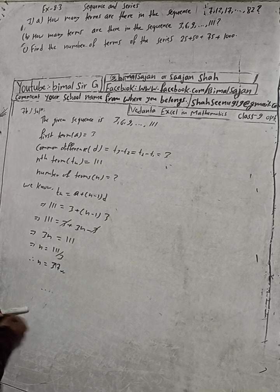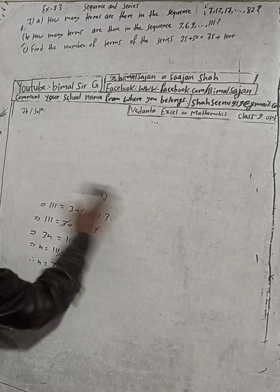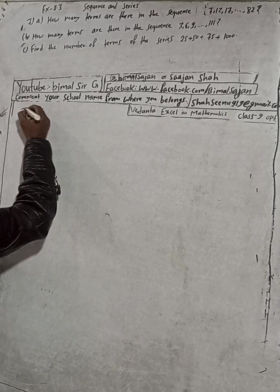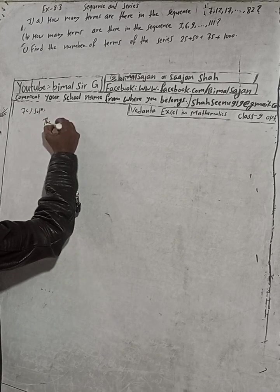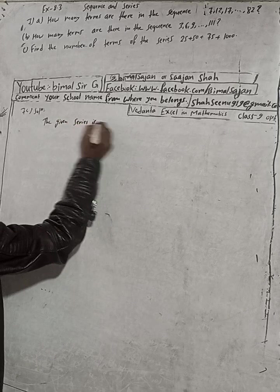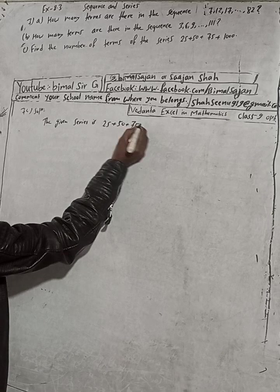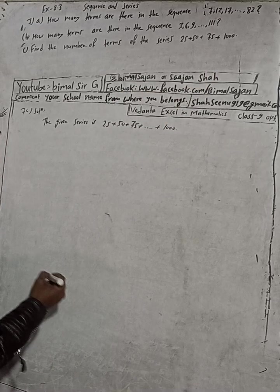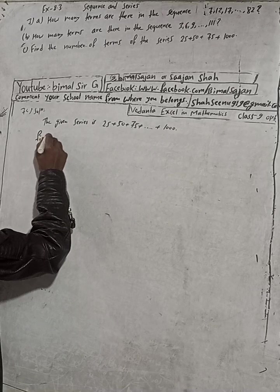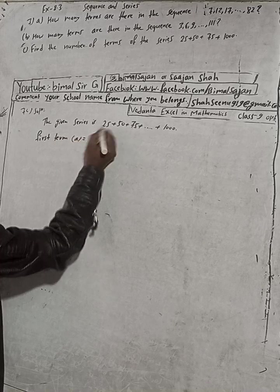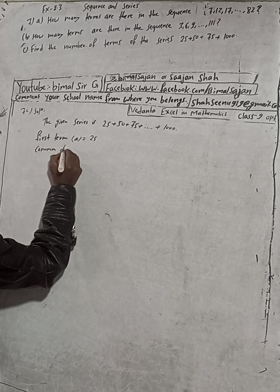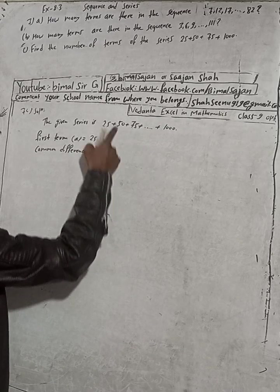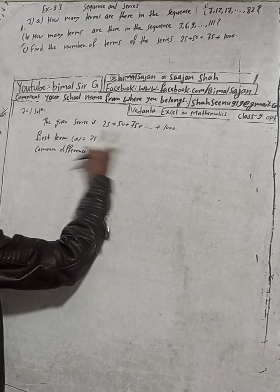Part c: the number of terms of the series. The given series is 25 plus 50 plus 75 plus dot dot dot. From this, what we come to the first term? First term a is equal to 25, and common difference, indicated by d, is 50 minus 25 equals 25, 75 minus 50 equals 25. So common difference is the same.